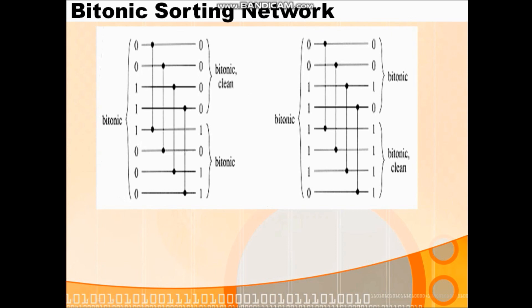Comparing 0 and 1: minimum goes to the upper side, so output is 0 on top and 1 on bottom. Comparing 0 and 0: they are same, output stays as is. Comparing 1 and 0: minimum is 0, so 0 goes to the upper side and 1 goes below. Similarly, comparing 1 and 0 again: 0 goes on top and 1 goes to the bottom. After applying the half cleaner, we observe the outputs.